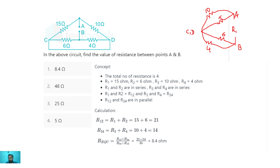From point A to C-D, the 10 ohm and 15 ohm are connected in parallel: 10×15 / (10+15) = 6 ohm. From point B to C-D, the 6 ohm and 4 ohm are in parallel: 6×4 / (6+4) = 24/10 = 2.4 ohm. These two results are in series, so R_eq = 6 + 2.4 = 8.4 ohms. The correct option is 8.4 ohms.